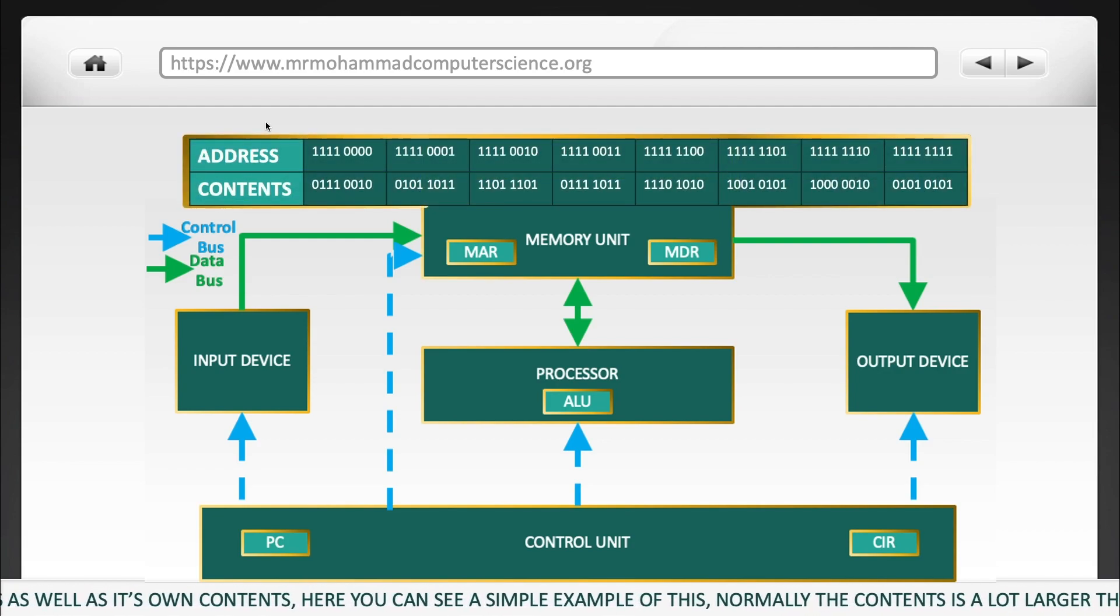Each partition has its own address as well as its own contents. Here you can see an example of this. Normally the contents is a lot larger than this, of course. The address is used to uniquely identify each of the partitions and the contents will always be stored as binary values in each of these partitions.